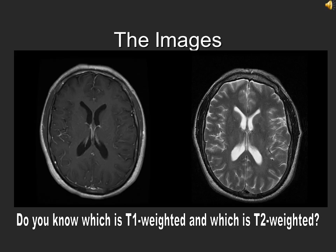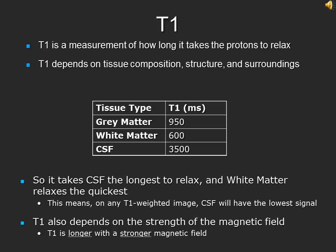So now that we know some of the physics behind MRI, let's get on to the images. How do we know which is T1 weighted and which is T2 weighted? T1, as was mentioned before, is based on the time it takes protons to lose their energy or relax. This time depends on tissue composition, structure, and its surroundings. Looking at specific mediums, CSF, as with most fluids, has a long T1, while gray matter, white matter, and fat have shorter T1 times.